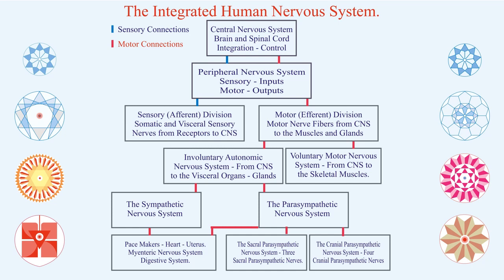Most of this information is available in books and journals. But I am trying to bring impeccable wisdom to the core — to explain something which has been ignored by most people. I don't see this has been included as part of the integrated human nervous system. The heart has four pacemakers, the uterus also has pacemakers, and there is the myenteric nervous system associated with the digestive system. These three components form the fifth level of the nervous system, beyond sympathetic and parasympathetic, though still associated with them. But they can function independently of the rest of the brain, including the autonomic nervous system.